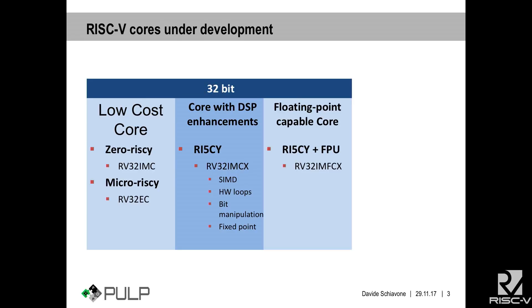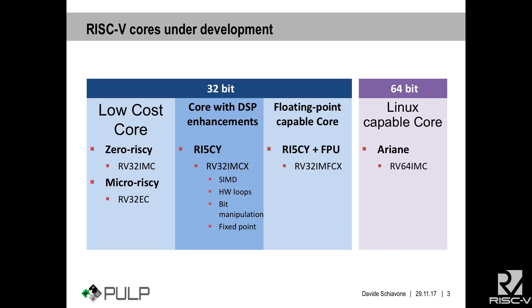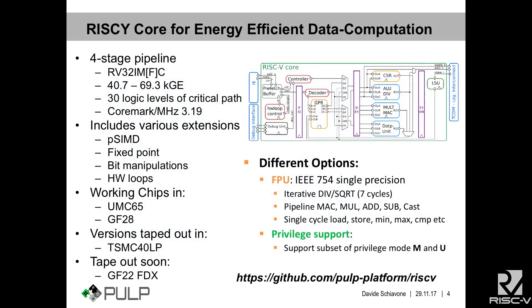RI5CY is DSP-enhanced, and recently we extended it with floating-point capabilities if your application needs more precision. This is the 32-bit set of our cores. Recently, we are also looking at 64-bit implementations able to run Linux. So let's zoom in on our cores — RI5CY is our most famous core, a four-stage pipeline in-order RISC core implementing the IMC extension and optionally floating-point.